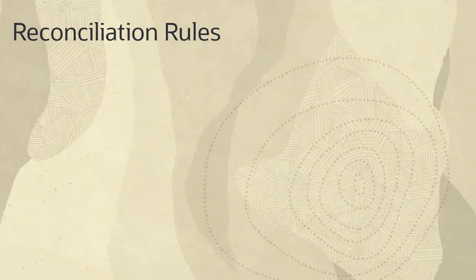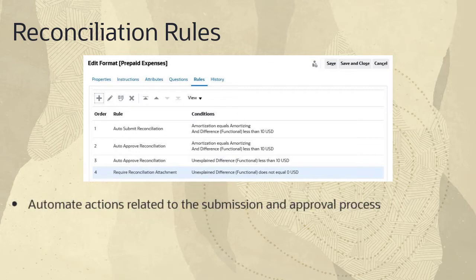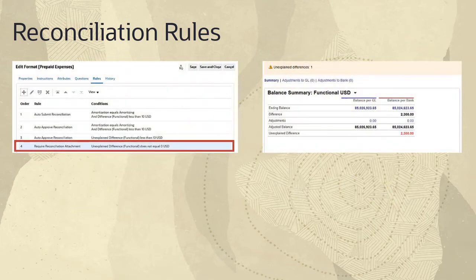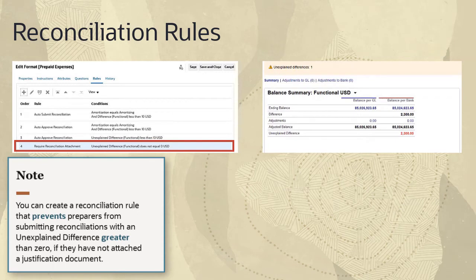Let's start with reconciliation rules. Reconciliation rules automate actions related to the submission and approval process for reconciliations. They can also set attribute values. For example, your reconciliation process requires that justifying documentation be attached to a reconciliation if the balance for unexplained difference is greater than zero. You can create a reconciliation rule that prevents preparers from submitting reconciliations with an unexplained difference greater than zero if they have not attached a justification document.